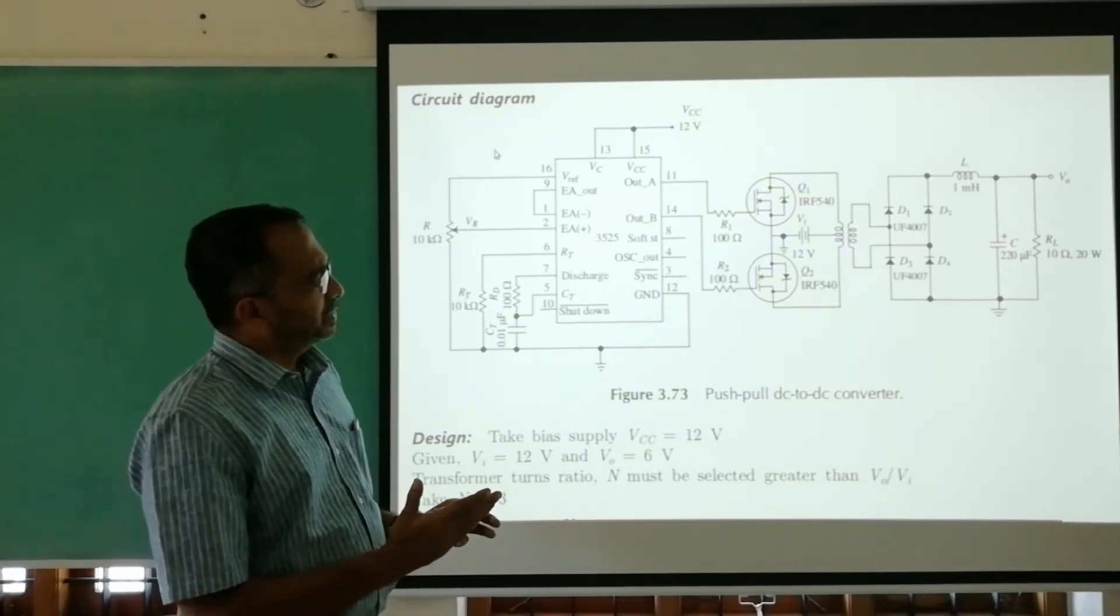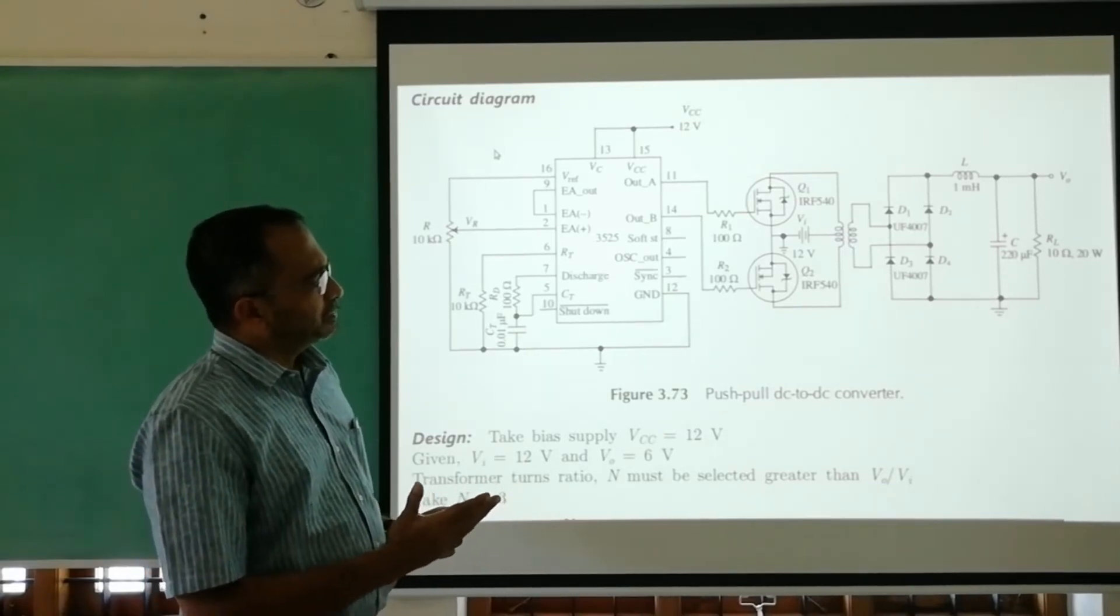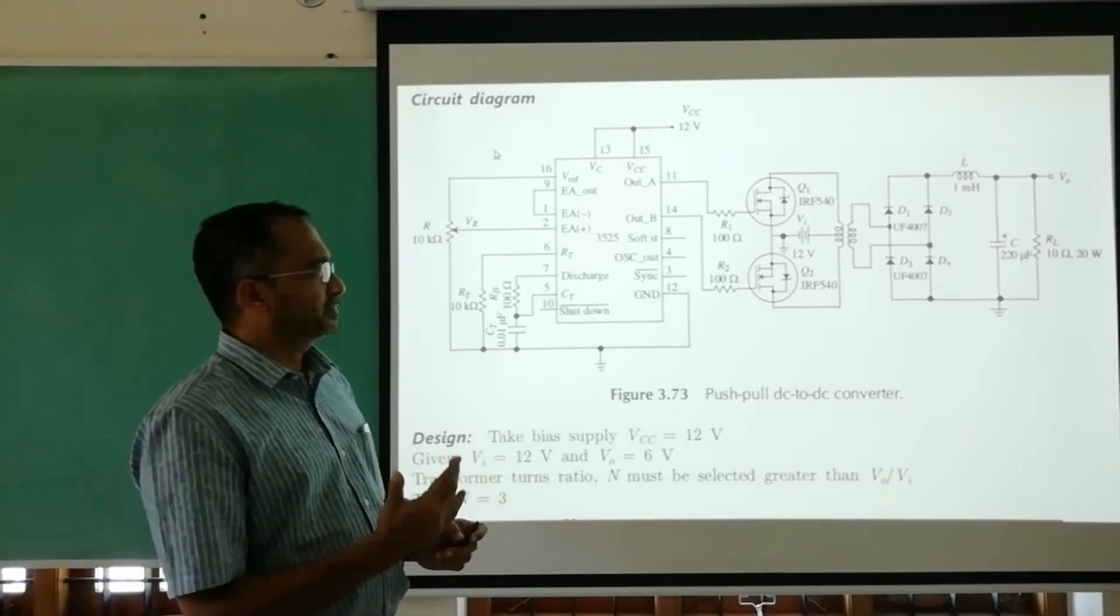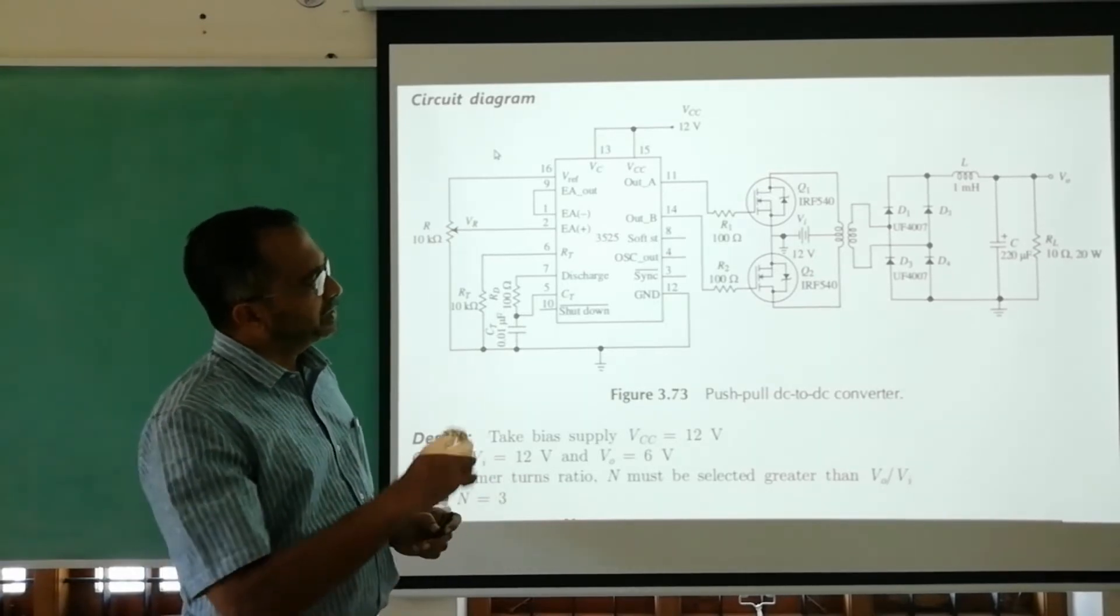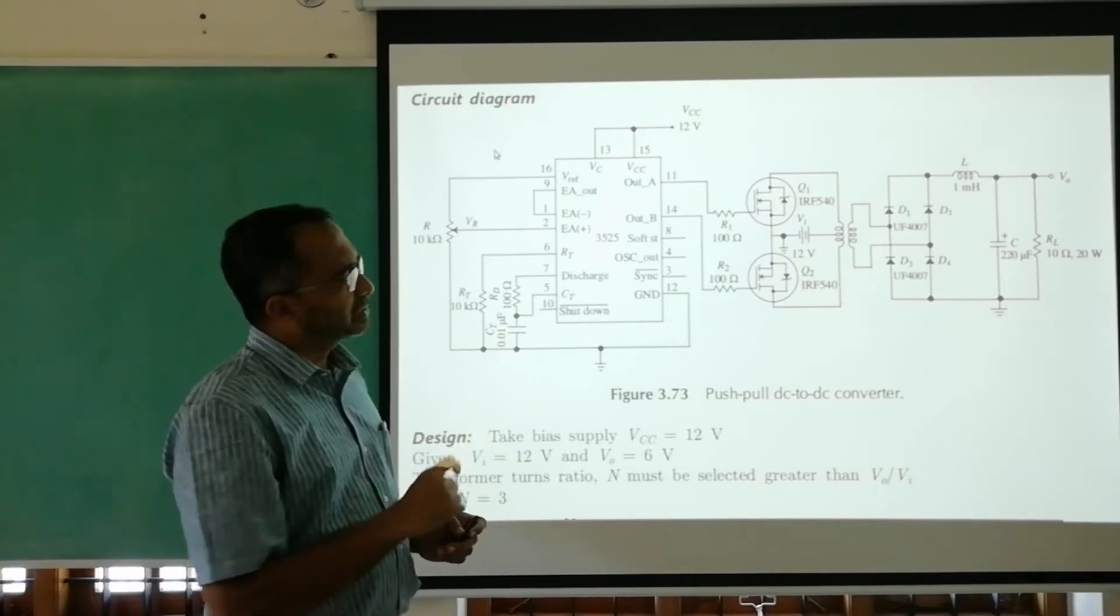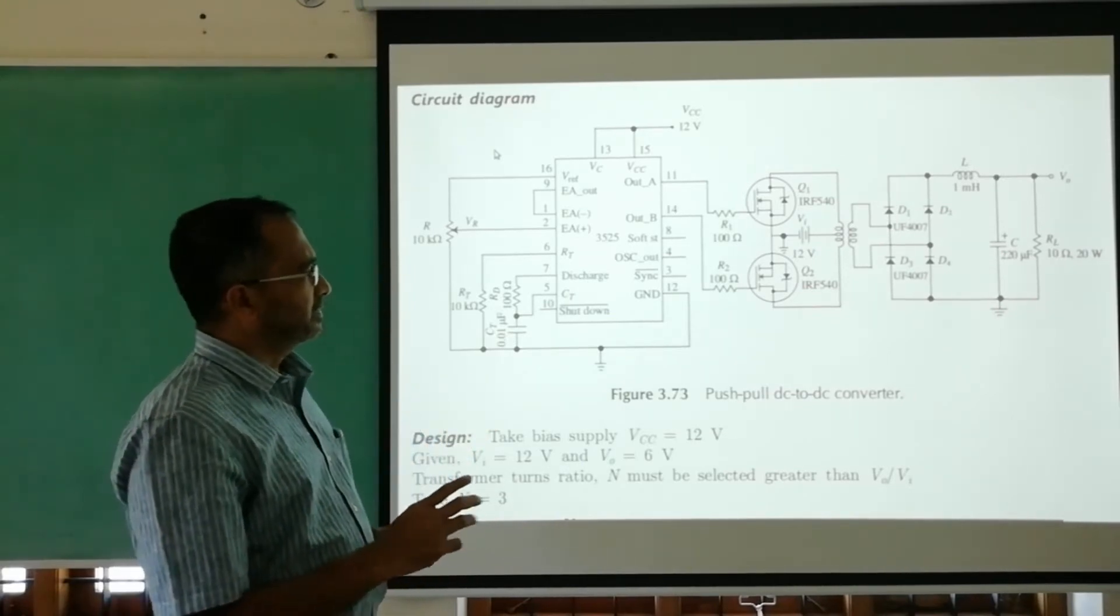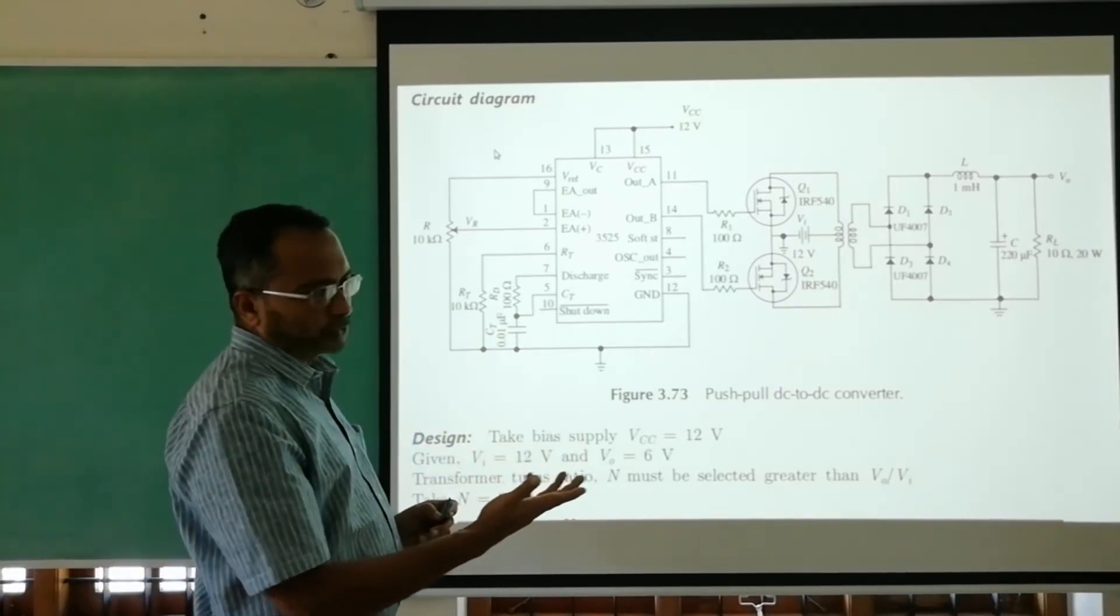That transformer turns ratio should be taken more than Vo/Vi - the number of turns in the input and output. In this case we know that ratio is 2 because input is 12 and output is 6.